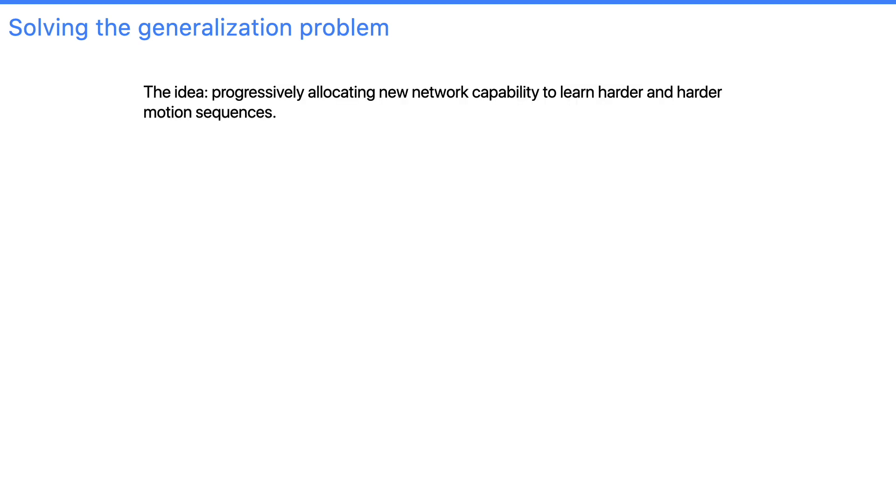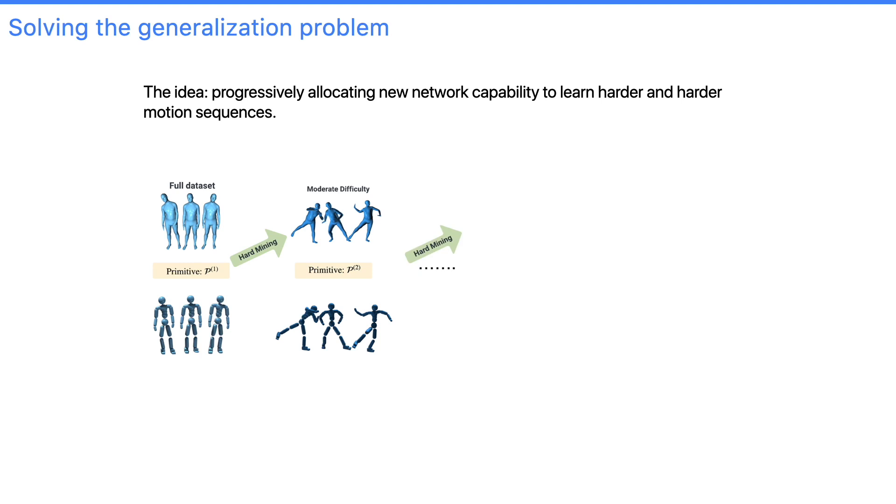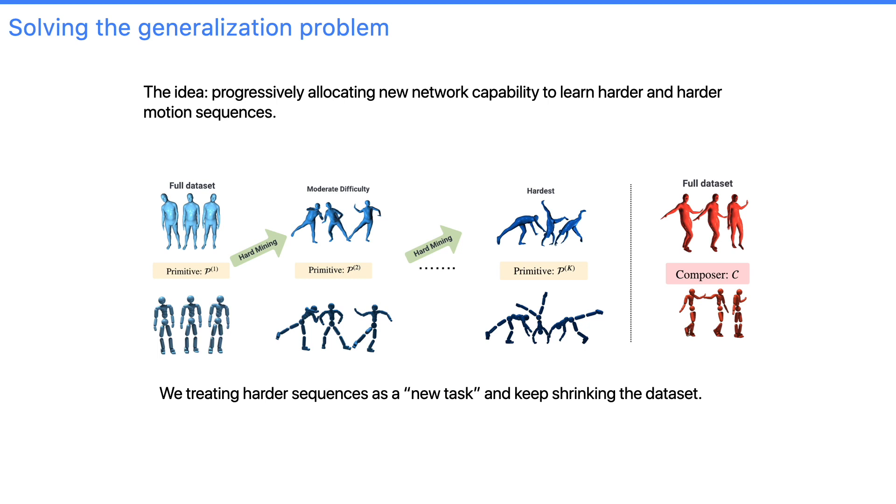Here, we present a simple idea. When the performance saturates, we can allocate a new network capacity to learn the remaining hard motion sequences that the current policy cannot perform. And progressively, we can keep shrinking the dataset and allocate new primitives. We can keep performing this process, which will give you a sequence of primitives that combined can perform all of the motions in the large dataset.